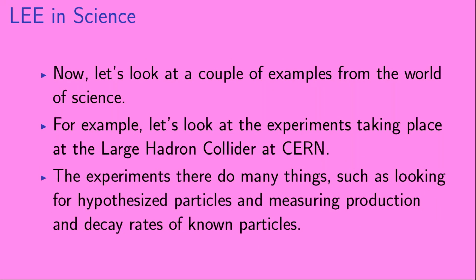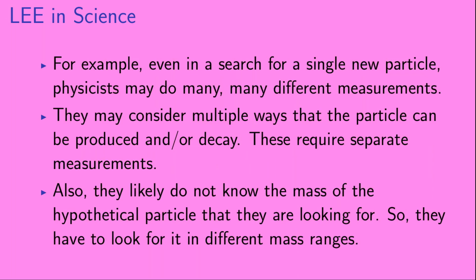Now let's look at a couple of examples from the world of science. Let's look at the experiments taking place at the Large Hadron Collider at CERN. The experiments there do many things, such as looking for hypothesized particles and measuring production and decay rates of known particles. Even in a search for a single new particle, physicists may do many different measurements. They may consider multiple ways that the particle can be produced and/or decay, requiring separate measurements. They also likely do not know the mass of the hypothetical particle they are looking for, so they have to look for it in different mass ranges.